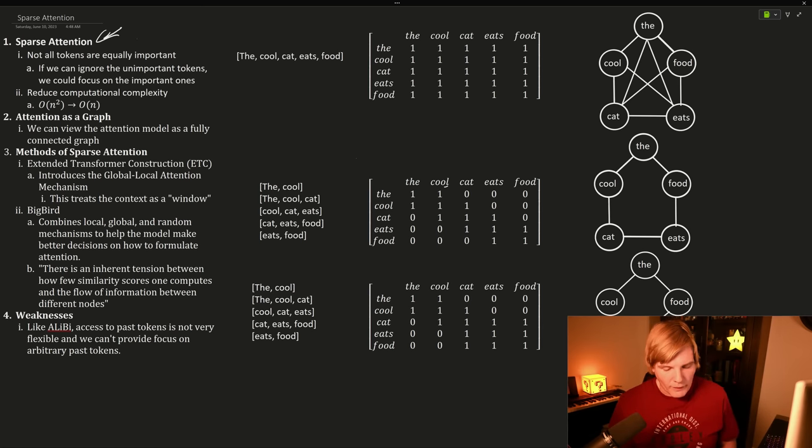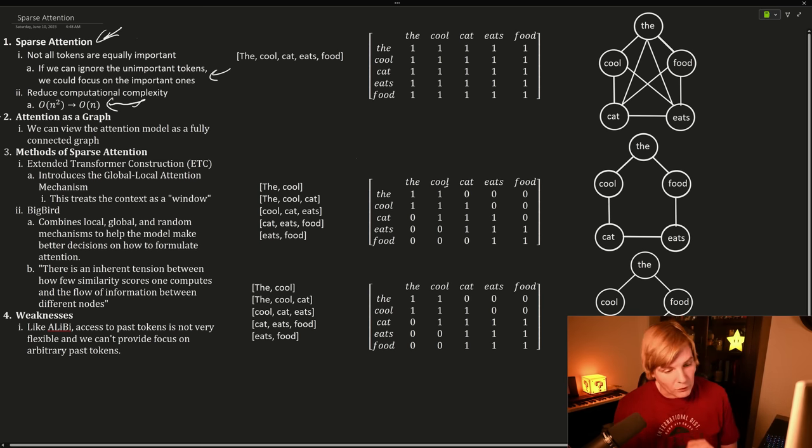And this can be achieved by methods like sparse attention, which takes advantage of the fact that not all tokens are created equally. And if we could ignore unimportant tokens and focus more on important tokens, then we could reduce our computational complexity from quadratic closer to linear.